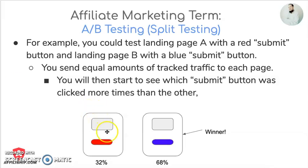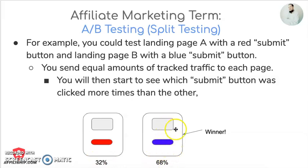As you can see in this example, you've got one landing page with a red button and another landing page with a blue button. One was clicked 32% of the time and one was clicked 68% of the time. So for this test, the winner is the one with 68%, which is the blue submit button.